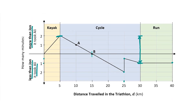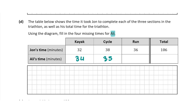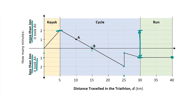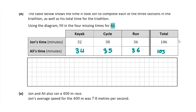For the run, Ali is one minute ahead of John at the start and still one minute ahead at the end, meaning they took the same time to run. If John took 36 minutes, Ali also took 36 minutes. Finally, John's total time was 106 minutes, and at the end of the triathlon Ali was one minute less than John, so Ali's total time was 105 minutes. That completes the table, and for this question you get 20 marks.